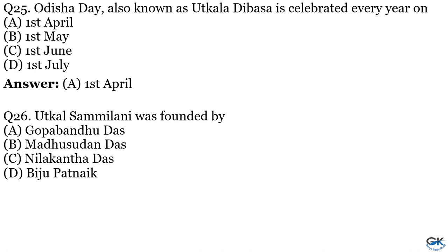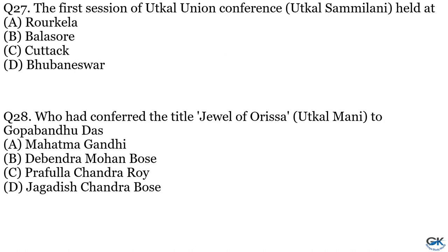Question No. 26: Utkala Sammilani was founded by whom? Option A: Gopabandhu Das. Option B: Madhusudan Das. Option C: Nilakantha Das. Option D: Biju Patnaik. The answer is Option B, Madhusudan Das. Question No. 27: The 1st Session of Utkala Union Conference was held at which place? Option A: Rourkela. Option B: Balasore. Option C: Cuttack. Option D: Bhubaneswar. The answer is Option C, Cuttack.